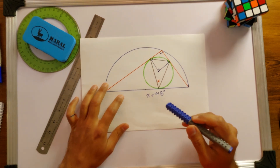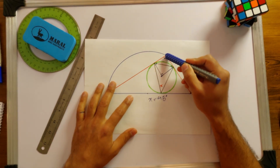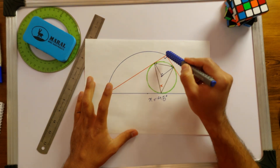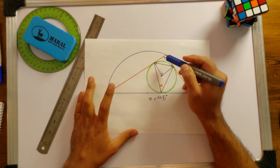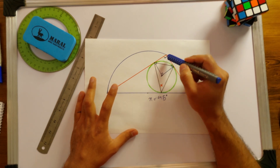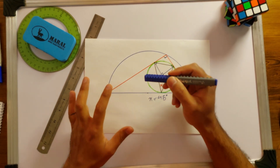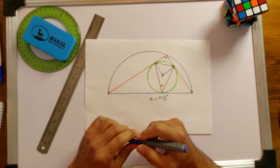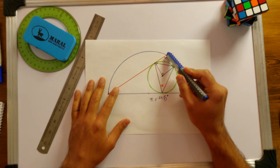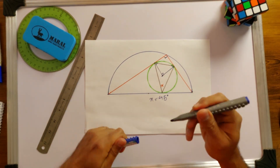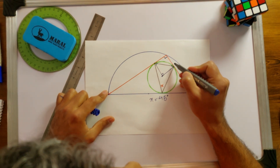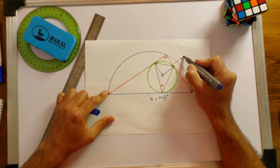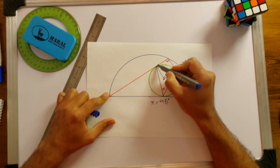Looking at our problem, we know this is a 90-degree angle based on the angle at the circumference theorem. We also know that the lengths of tangents from the same external point are equal, so the triangle formed here is an isosceles triangle. That means this small angle here is 45 degrees, and so is this one.